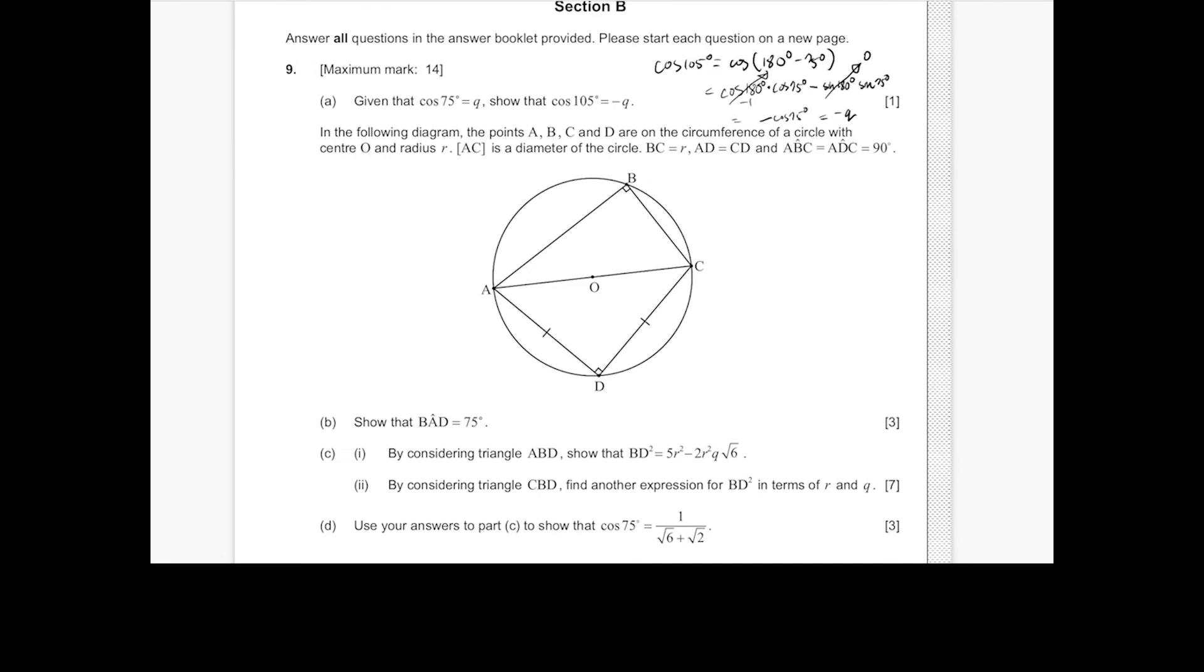Next up, show that angle BAD is 75 degrees. So using the information of triangle ADC, this is an isosceles triangle. So that means since these two angles are equal, and this is 90, these are equal angles of 45 degrees.